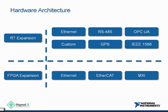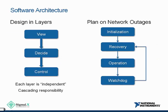Once you've made your hardware choices, it's important to think about the software architecture. The two most important things to consider: first, design in layers. This is a way of saying make your software architecture modular — good programming practice regardless of whether you're building a distributed control system or not. For a distributed control system specifically, you want each layer of your node tree to be somewhat independent so they can each operate without the others. I've broken this down into three sections: View, Decide, and Control.